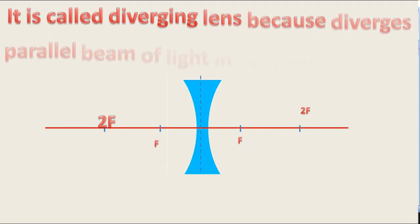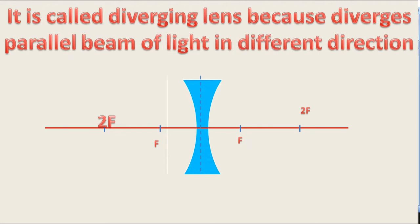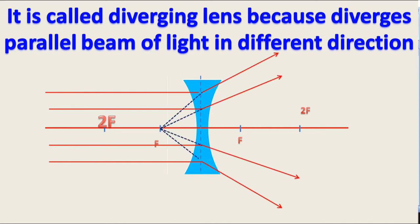It is called diverging lens because it diverges parallel beams of light in different directions from the principle of focus.